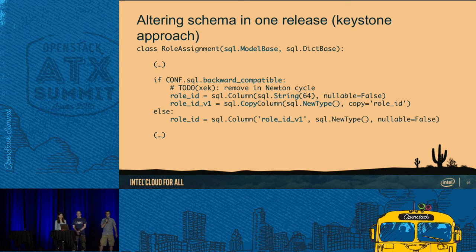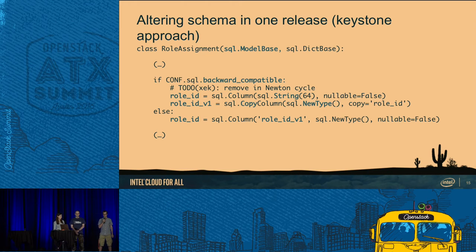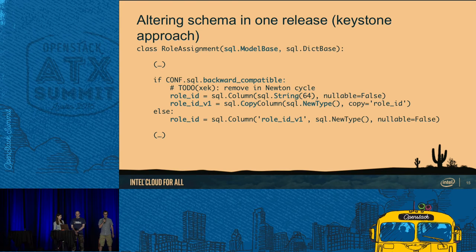In Keystone we wanted to keep the change in one release. In the SQLAlchemy model you could introduce a backwards-compatible flag: in the new version, when keeping compatibility, you have the old column role_id, introduce a new column, and there is a copy column implemented which also converts data using the new type. When you switch the flag you stop being backwards compatible. Once all data is migrated, you switch this flag and then drop the old column.